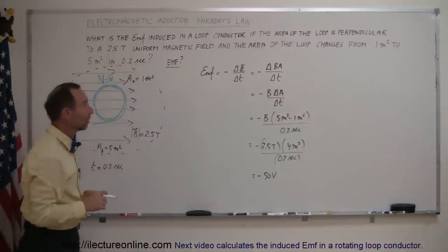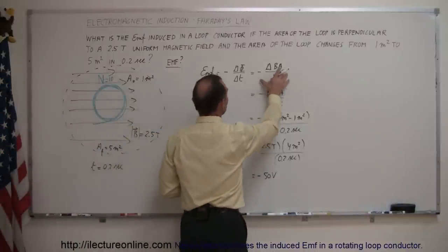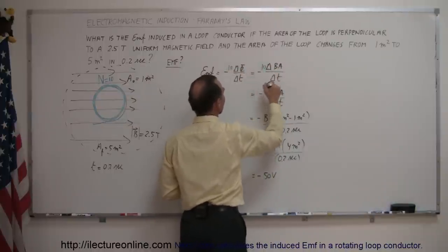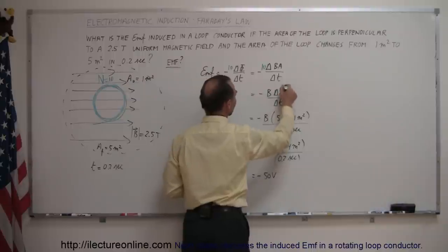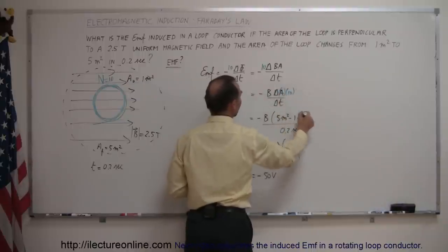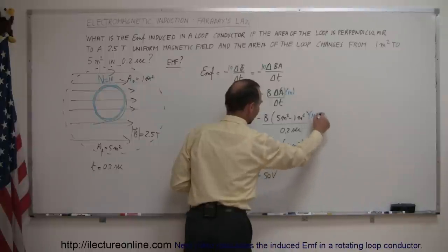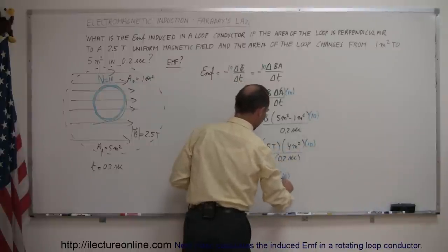So how does that change the equation? Well, in that case, the EMF induced would be 10 times that amount, so it would be 10 times this. It would be 10 times the area, so the area times 10, and so it would be times 10, times 10, and finally times 10, so that would be minus 500 volts.